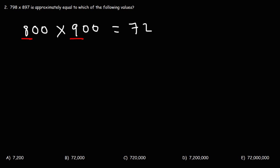We're going to multiply 8 by 9, which is going to give us 72. And, then, we're going to count the zeros that we have. We have 2 in the first number and 2 in the second number. So, our final answer should have 4 zeros.